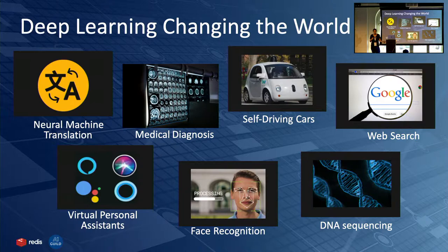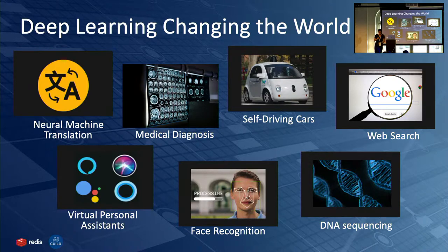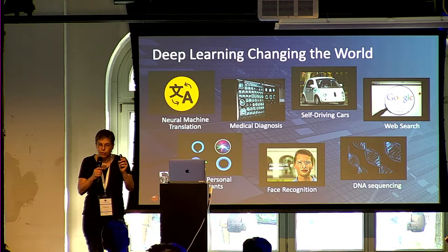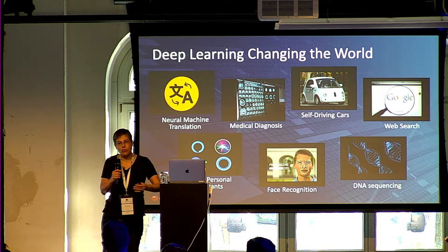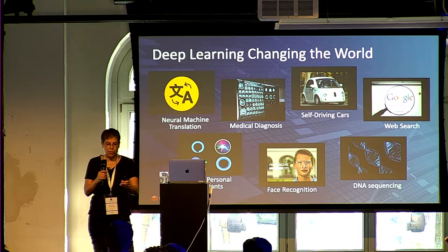Today, AI and deep learning are changing the world. Google Translate wouldn't be as good without deep learning. Siri wouldn't seem as intelligent. Face recognition on mobile phones for authentication wouldn't be as accurate. Soon we won't need to drive our cars, and AI will do better medical diagnosis than doctors. Even Google web search has changed — in the past you needed exact keywords, but today you write in free text and it performs semantic search, capturing the actual meaning of what you want.